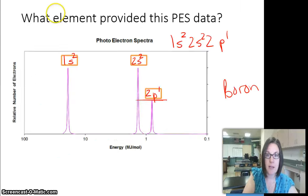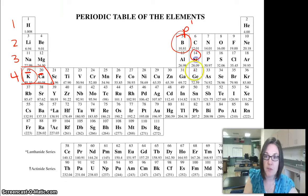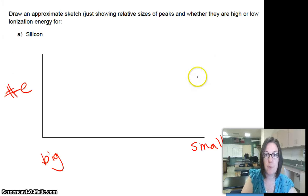So for silicon, if we hop back to our periodic table, silicon has 14 electrons. So if we wanted to plot 14 electrons...